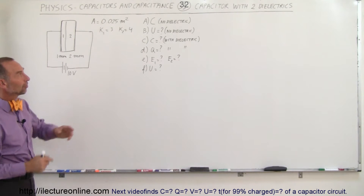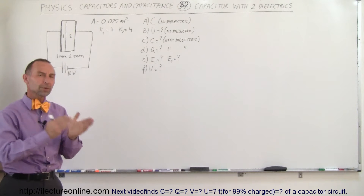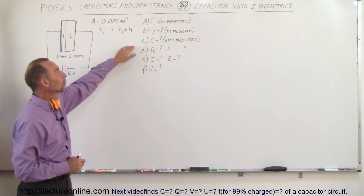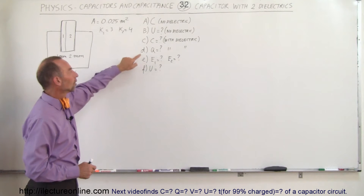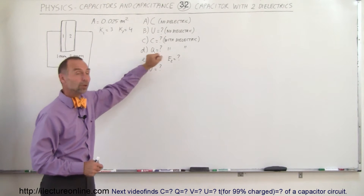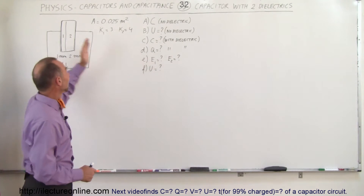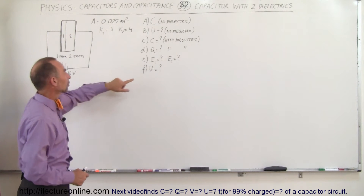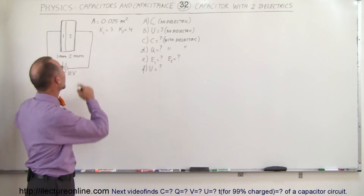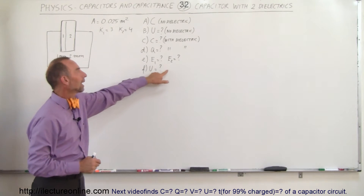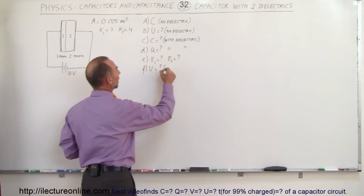The questions are: what is the capacitance and the energy on the capacitor before we put the dielectric in; then what is the capacitance with the dielectric; what is the charge on the plates with the dielectric; what is the electric field in dielectric 1 and in dielectric 2; and finally what is the energy contained within the capacitor with the dielectric.